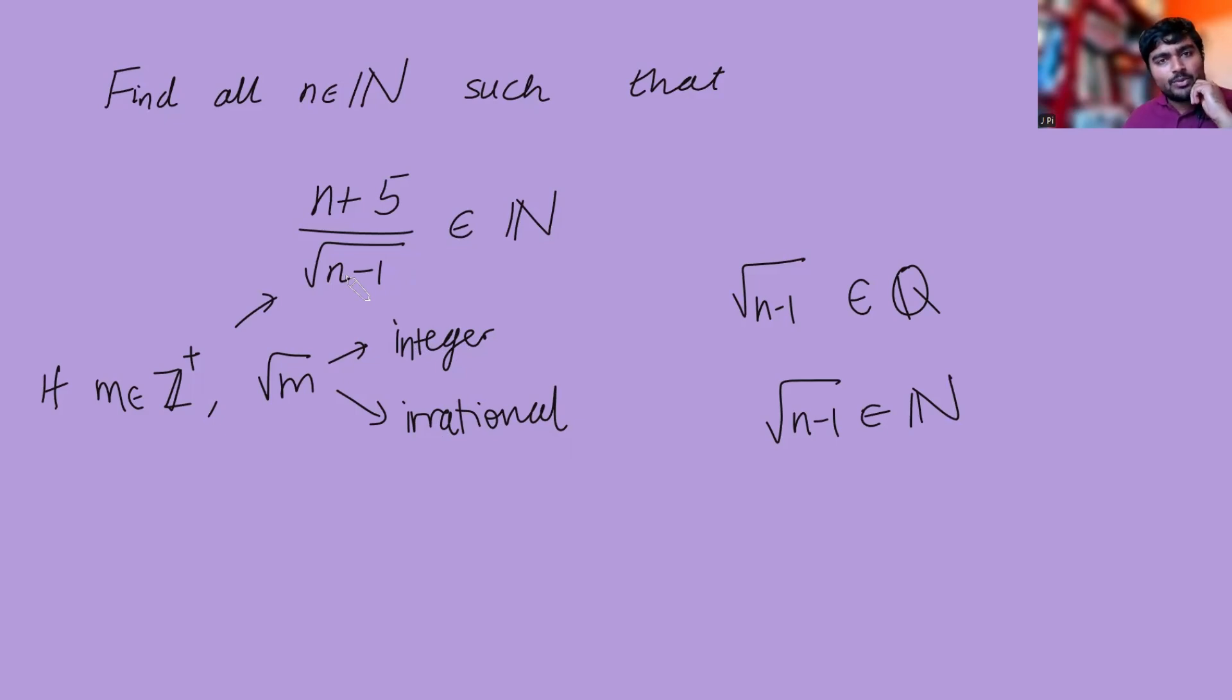How do we use that to help us narrow down what n can be? Well, let's go back to our expression. So n plus 5. We're going to write n plus 5 in a very special way. We're going to write it as root n minus 1 times root n minus 1. So obviously if I do root n minus 1 times root n minus 1, that's just n minus 1. And so then I'll add 6 to it to give me n plus 5 over root n minus 1.